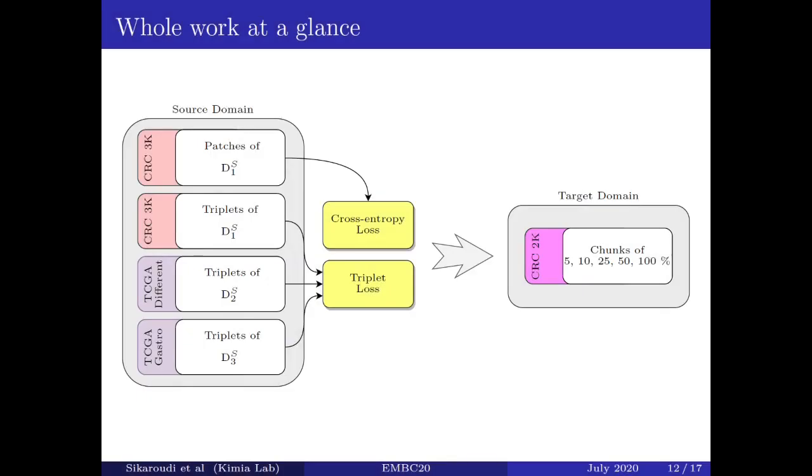Here you can see all the experiments at a glance. We have trained two models with CRC 3K patches. The first one is training with patches and CRC 2K loss, and the second one is training with triplets and using triplet loss. However, as we described, the triplets of TCGA data were sampled using the spatial and tissue type information in an unsupervised manner. We didn't have any labels for the TCGA dataset patches. As a result, we trained extra two models on triplets extracted from TCGA. The first one was trained on all three anatomical sites called D2S, while the second model was only trained on the gastrointestinal sites from TCGA dataset called D3S, as the target domain was also related to the same anatomical site.